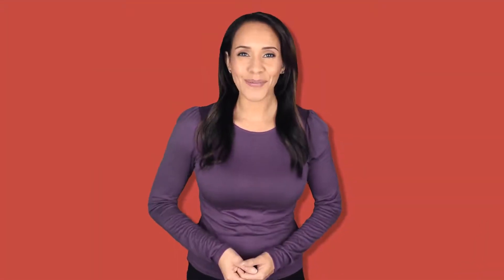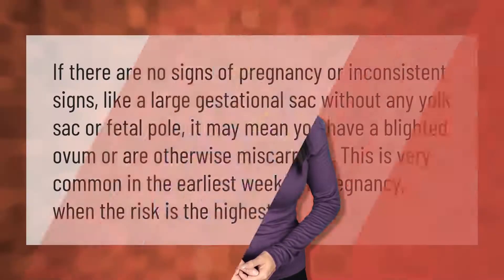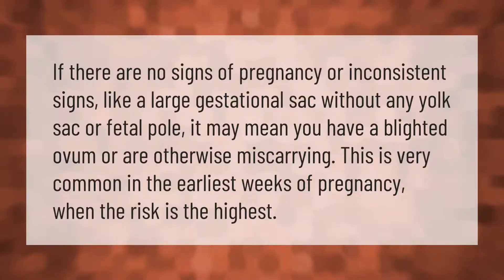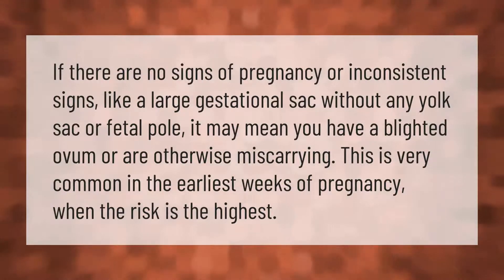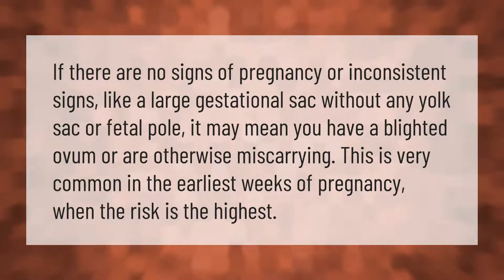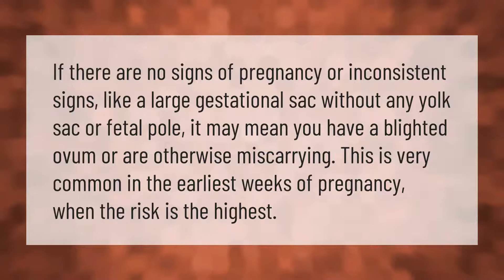If there are no signs of pregnancy, or inconsistent signs like a large gestational sac without any yolk sac or fetal pole, it may mean you have a blighted ovum or are otherwise miscarrying.